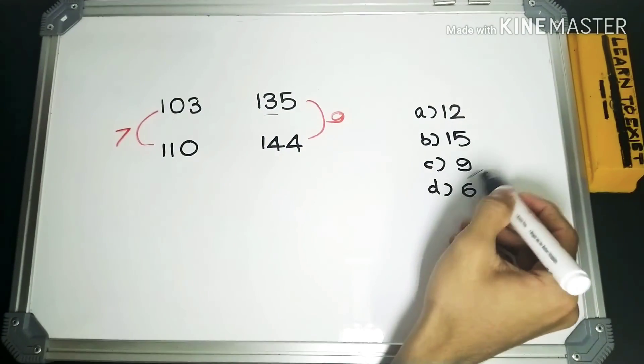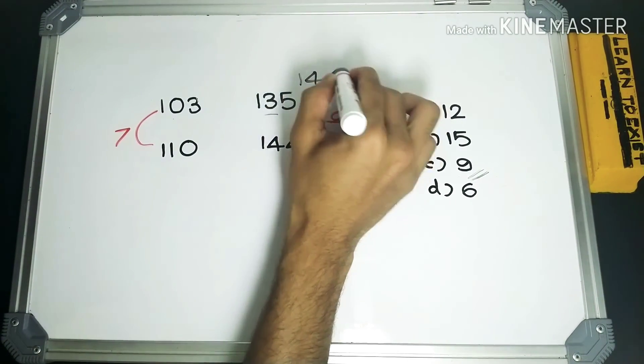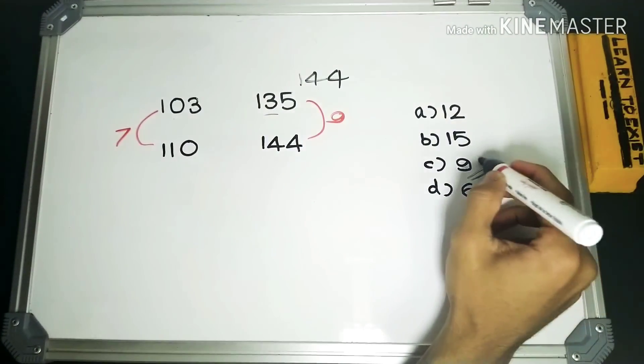It's 9, right? You can check it. 135 plus 9 will be 144. So this would be the answer here.